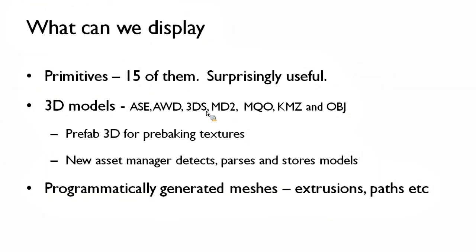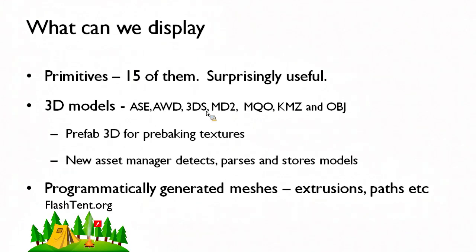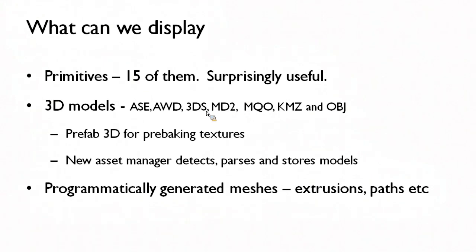You've also got Prefab 3D, which is great for importing. You can export from Prefab 3D into AWD, which is probably what you should be working with. I tend to stick with 3DS files exported from Blender. You can also generate meshes programmatically — extrusions is the classic one, where you can extrude a vector as a kind of cylinder in a lathe style, or extrude vertically. There's an awful lot of ways to generate your own meshes programmatically, and a lot of scope for doing very creative stuff, but you're going to need a bit of time for that.